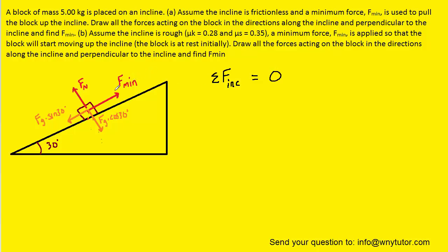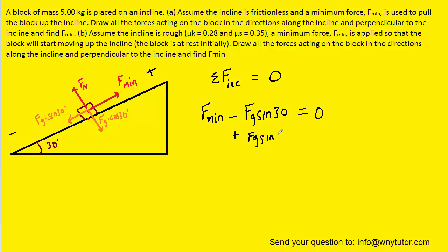Looking along the incline, we assign up the incline as positive and down the incline as negative. Fmin points up, so it is positive. Fg·sin(30°) points down, so it is negative. Setting the sum to zero gives: Fmin − Fg·sin(30°) = 0. Adding Fg·sin(30°) to both sides, we solve for Fmin.